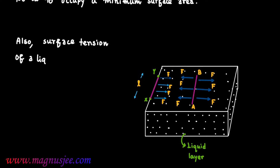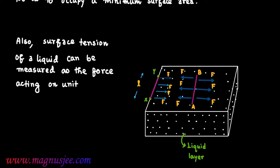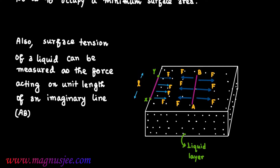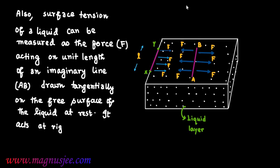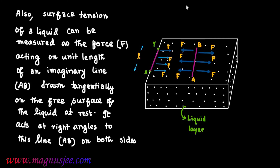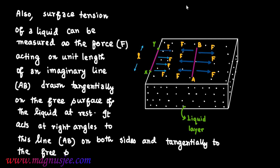Surface tension of a liquid at rest can be measured as the force acting on unit length of an imaginary line A-B drawn tangentially on the free surface of liquid at rest. This force of surface tension acts at right angles to this line A-B, on both sides, and tangentially to the free surface of liquid.